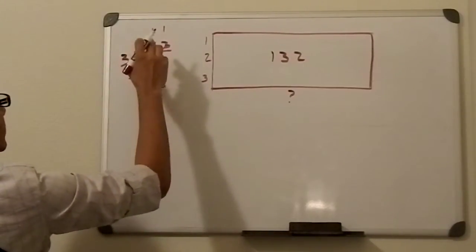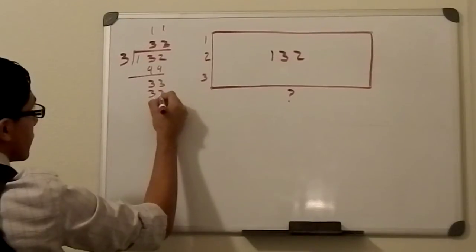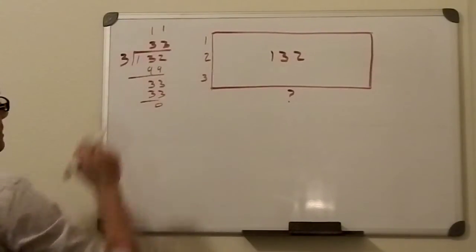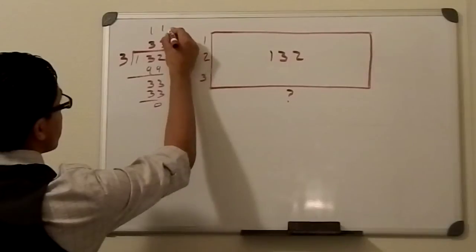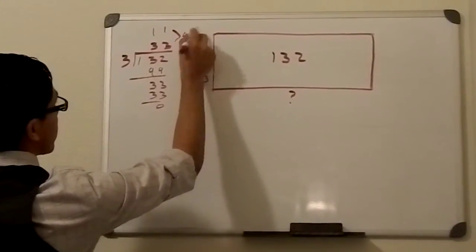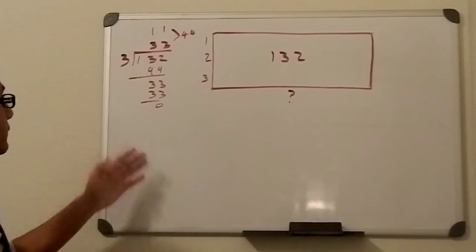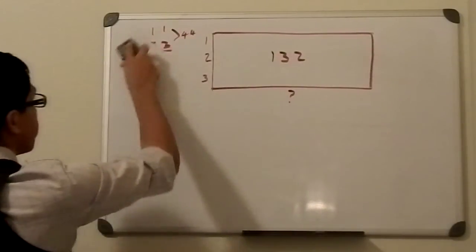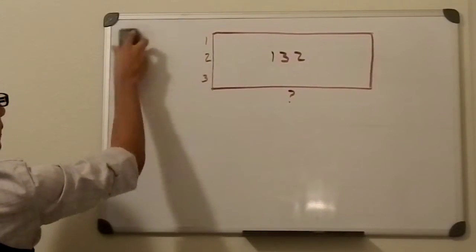11 times 3 is 33, subtract to get 0. And so now we have to add these up. And then when we add them up, we get 44, right? And that's another approach to it.